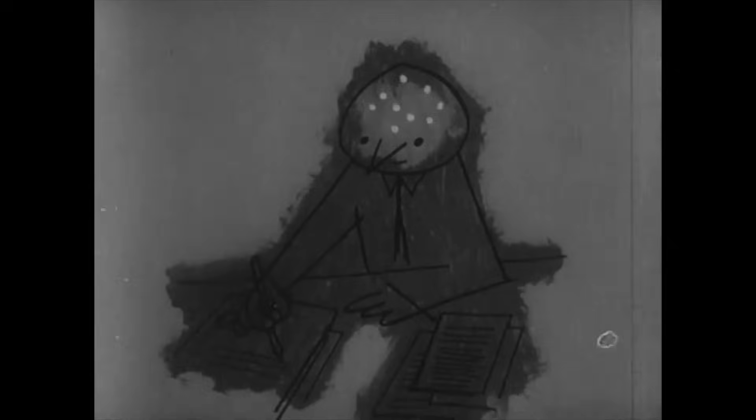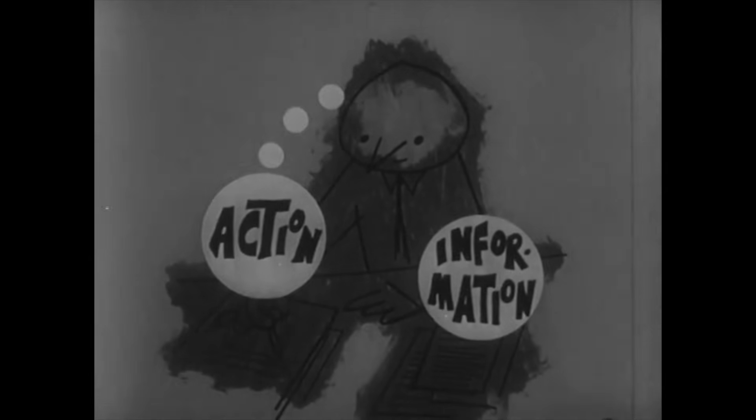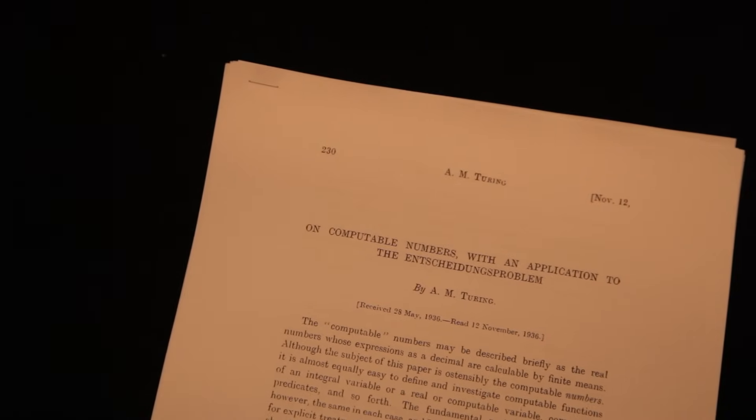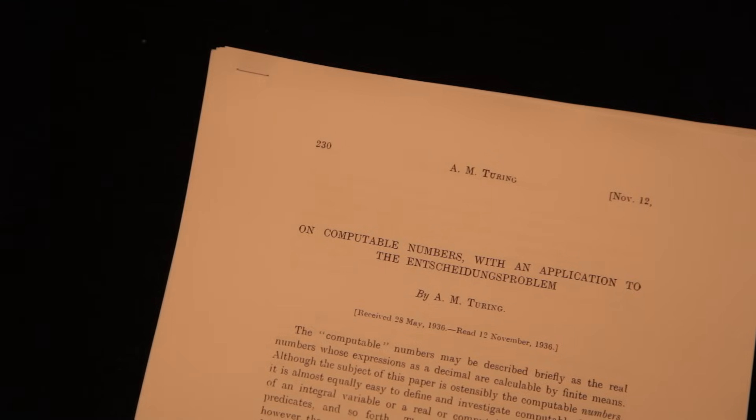Turing simplified everyone's conceptions of what physical form these decision machines would actually take. And in 1936, he published a historic paper that directly addressed Hilbert's challenges.